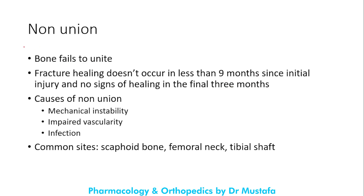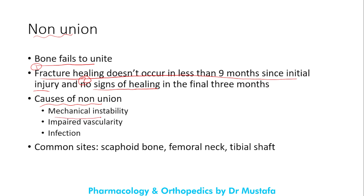In non-union, the bone fails to unite. Fracture healing doesn't occur within nine months since the initial injury, and there are no signs of healing in the final three months. To classify a fracture as non-union, both conditions must be met. Causes of non-union include mechanical instability — when the fractured fragments are unstable — impaired vascularity, and infection to the fracture bone.